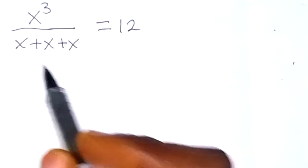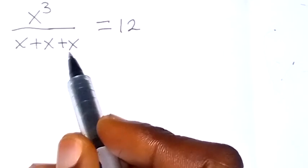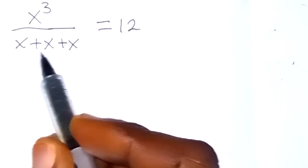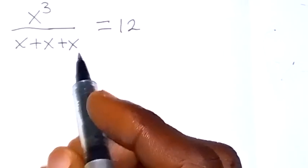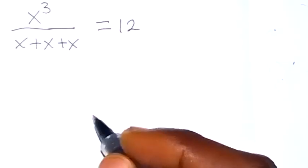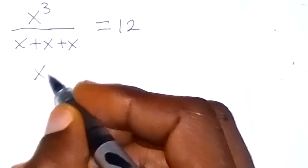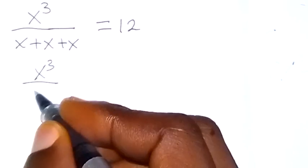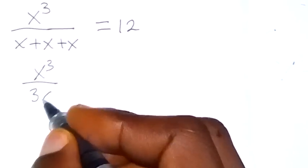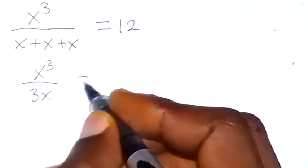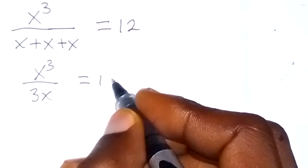From here, let's add this together. x plus x plus x is 3x, and we have x raised to the power 3 over 3x, which gives us 12.